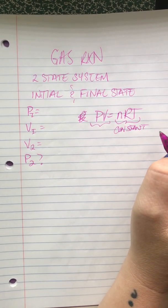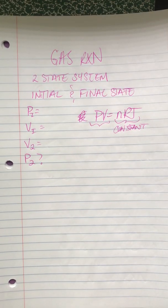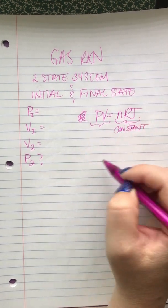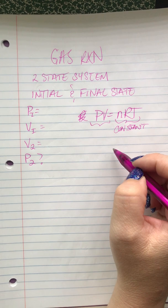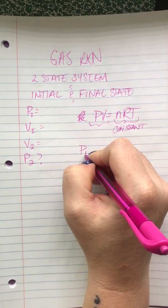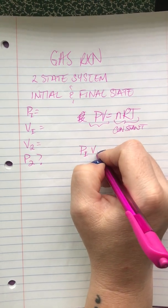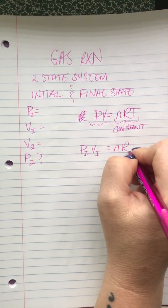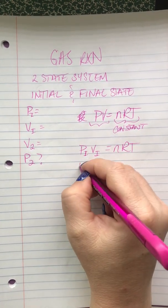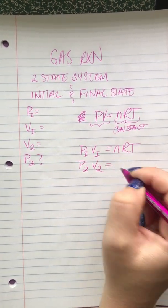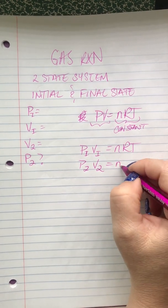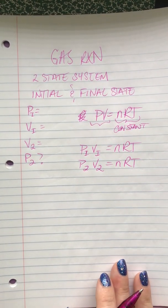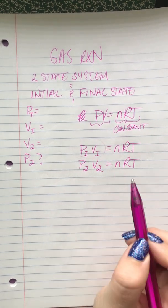You guys with me? So is everybody with me on this? So if you know that P1 or P initial times V initial equals nRT, and you also know that P2 and V2 or P final equals nRT, then what you can do is set these guys equal to each other.